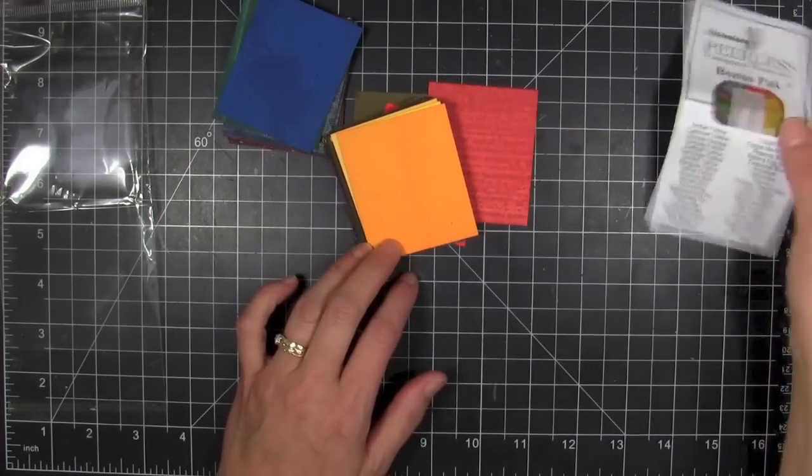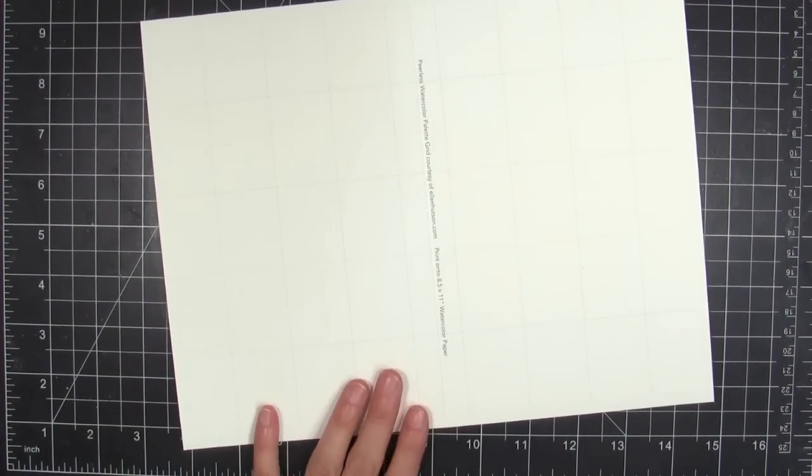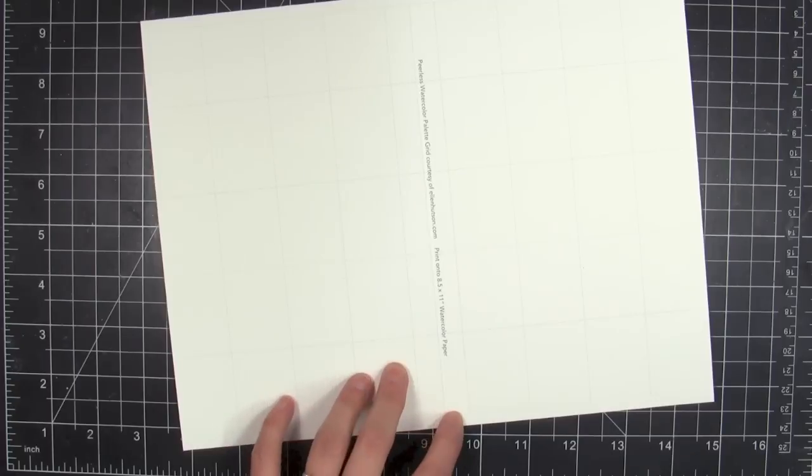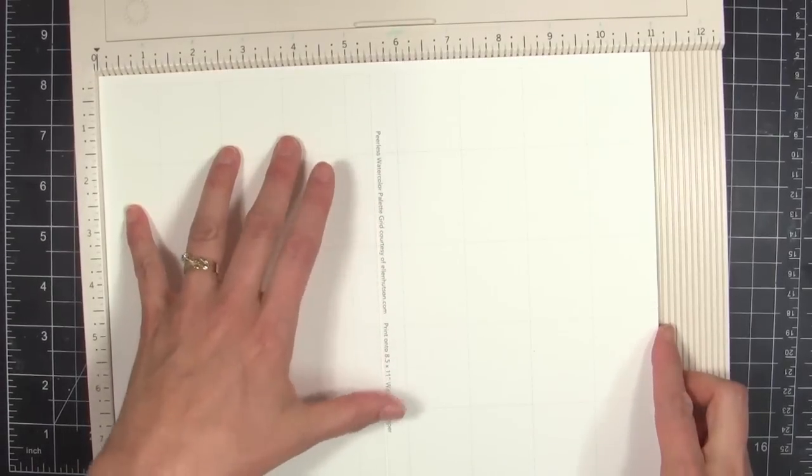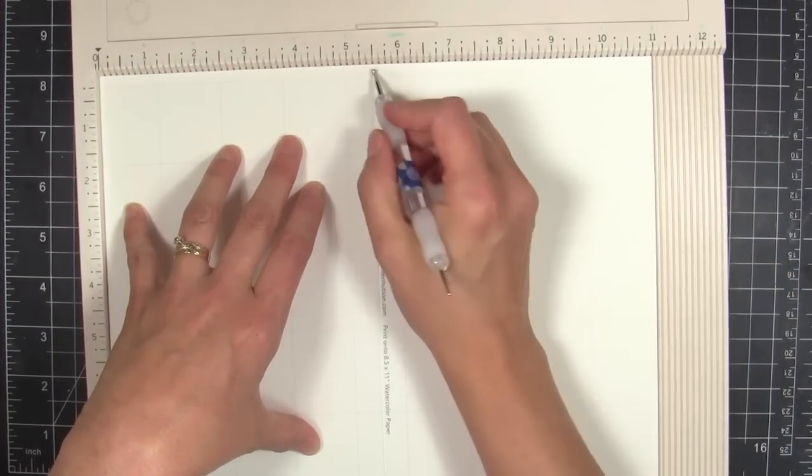I did some research online and found that a lot of artists were making their own swatch book or a palette that they could take with them—it's portable. So I spent some time thinking what size I wanted to make mine and came up with a grid that would accommodate 1-inch squares of these colors. I'm going to fit 40 of them onto an 8.5 by 11 sheet of cardstock.